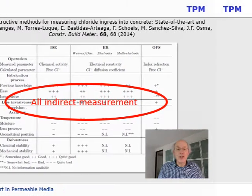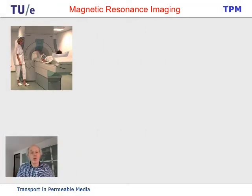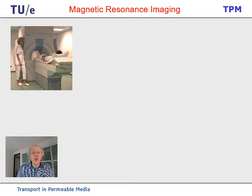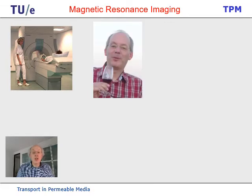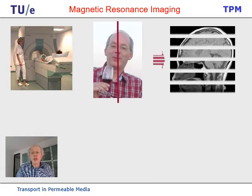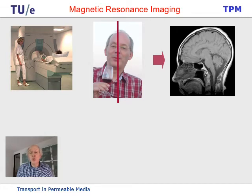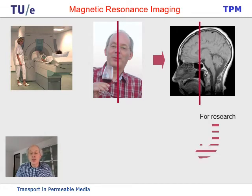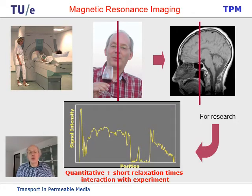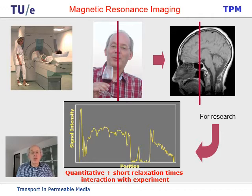There is one other method: magnetic resonance imaging, as we all know from hospitals. What you do is put a patient in an NMR machine, and what you're really doing is slicing through somebody's head and getting the moisture distribution. Now, in order to use it for research, we need something else — we need quantitative information, which is quite some effort, but we can do it.